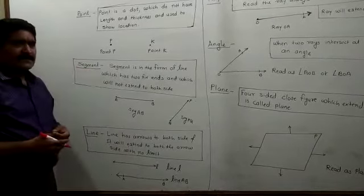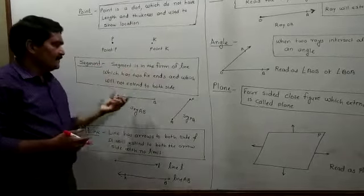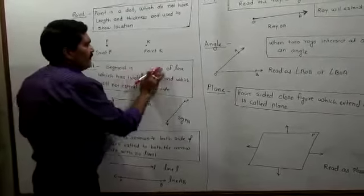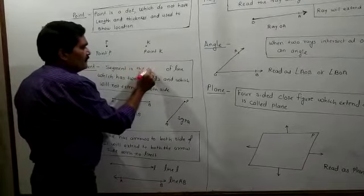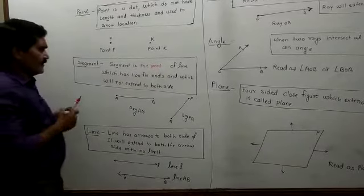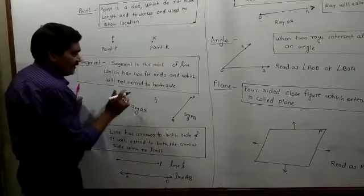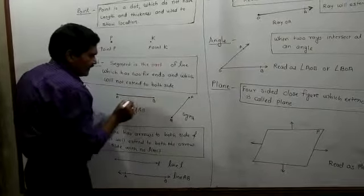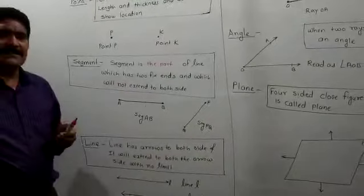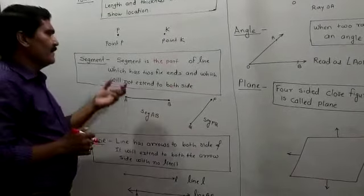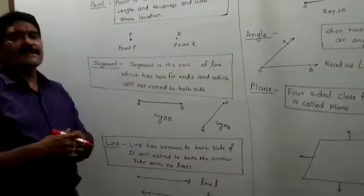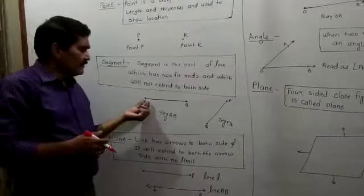The second concept is segment. A segment is in the form of a line — it is a part of the line. A segment is the part of the line which has two fixed ends. I will show this: when I join two points, a segment is formed, and these two points are the fixed ends. This segment will not extend — it will not increase — because a segment has limited extent. So, a segment is the part of the line which has two fixed ends and will not extend to both sides like a line does.